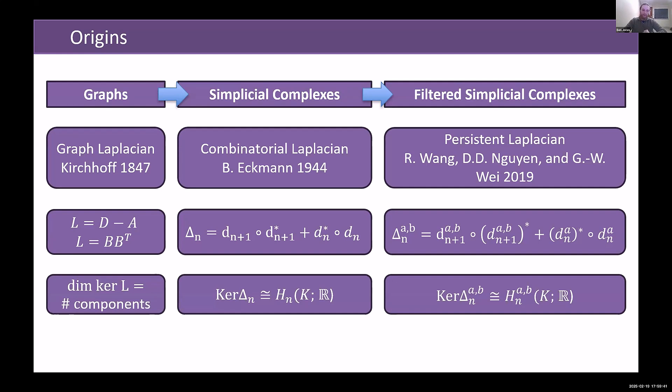With the graph Laplacian, the dimension of the kernel counts the number of connected components. The kernel of the combinatorial Laplacian for simplicial complexes gives you the homology, and the persistent Laplacian gives you the persistent homology.